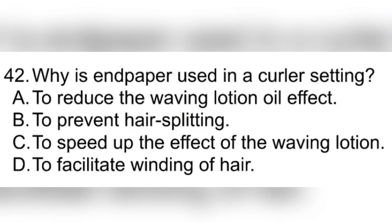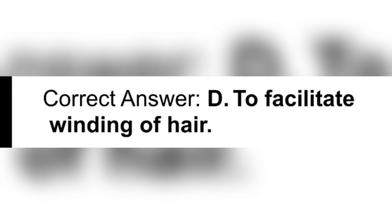Question 42. Why is endpaper used in a curler setting? A. To reduce the waving lotion oil effect. B. To prevent hair splitting. C. To speed up the effect of the waving lotion. D. To facilitate winding of hair. Correct answer: D. To facilitate winding of hair.